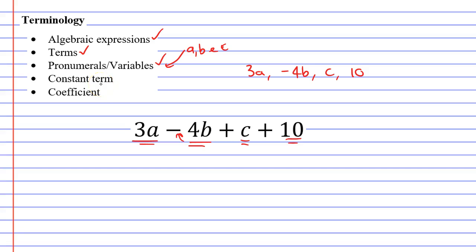We also need to talk about what a constant term is. If we think of the word variable, which means that something varies or changes, what do we mean by something that is constant? Well, constant means that it doesn't vary and doesn't change. So out of these four terms here, which one do you think doesn't change? Which one do you think stays constant? Well, it's going to be the number 10. This is our constant because it doesn't have any pronumerals or variables next to it.